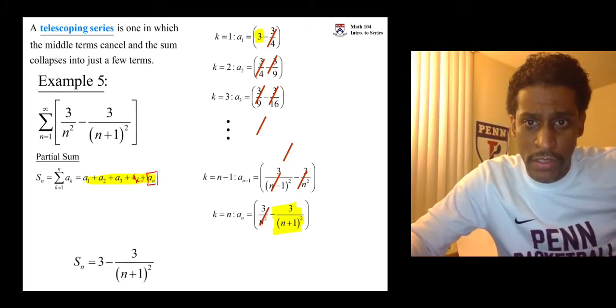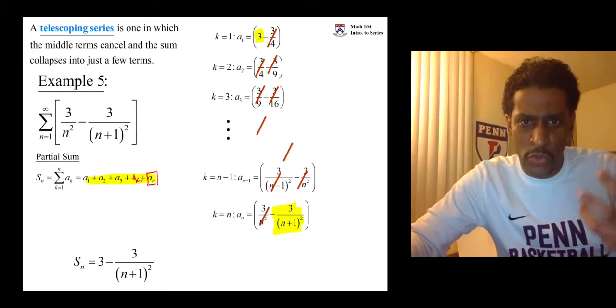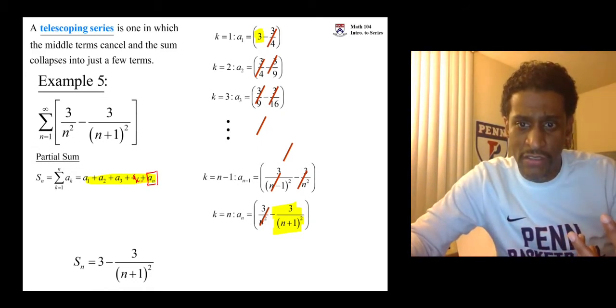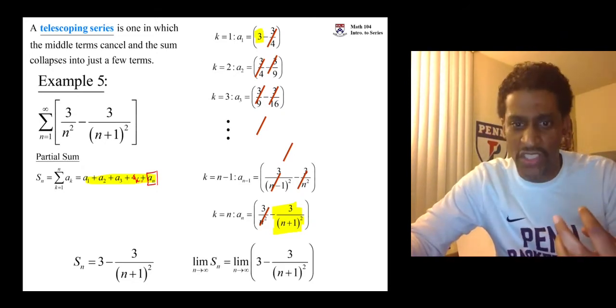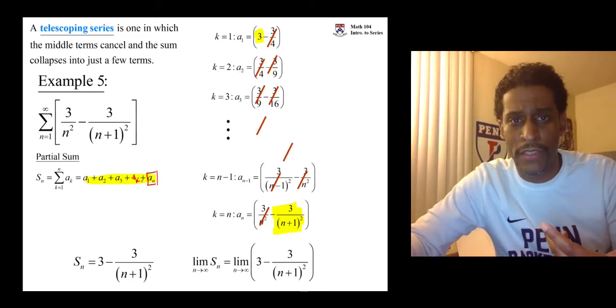Our job? Write down what this partial sum is. The remaining terms. And take a limit as n goes to infinity because that's what the sum is going to be equal to. If this limit exists.